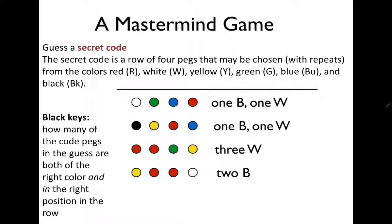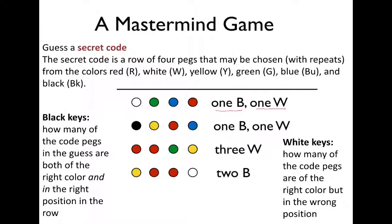On the right hand side you can see that B and W are mentioned. B represents that there is a peg in this row which is of the right color and it is at the right position. W represents that there is a peg in this row of the right color but it is at the wrong position. So we have been given some conditions, and while satisfying these conditions we need to identify the correct answer.